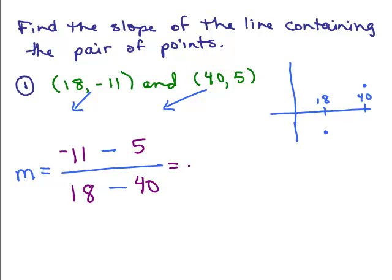So I get negative 16 in the numerator, negative 22 in the denominator, negative over negative is positive, and then I'm going to reduce this. 2 goes into both numbers, so it's 8 elevenths.